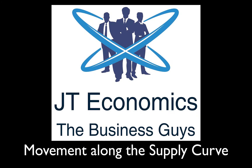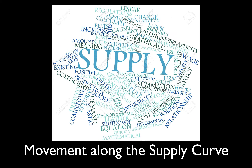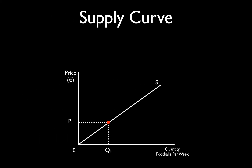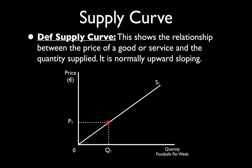In this video we want to explain the idea of movements along the supply curve. We're still on the supply playlist and just like movements along the demand curve, the idea is relatively similar, but we're looking at it from the firm's point of view. The supply curve shown here is upward sloping, meaning it obeys the law of supply.